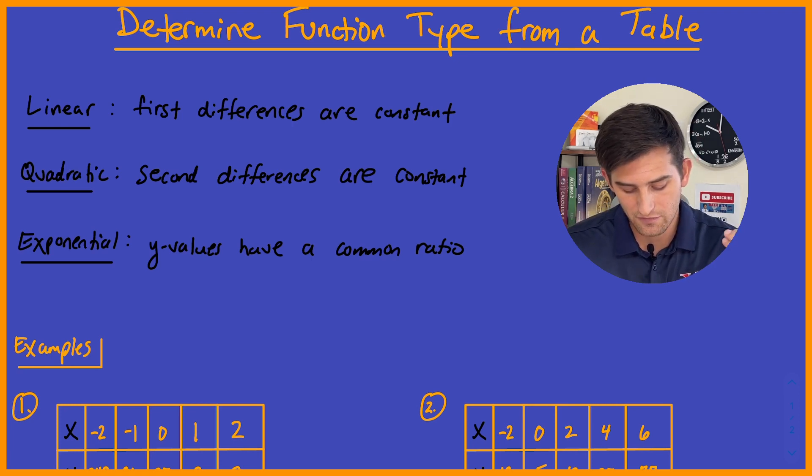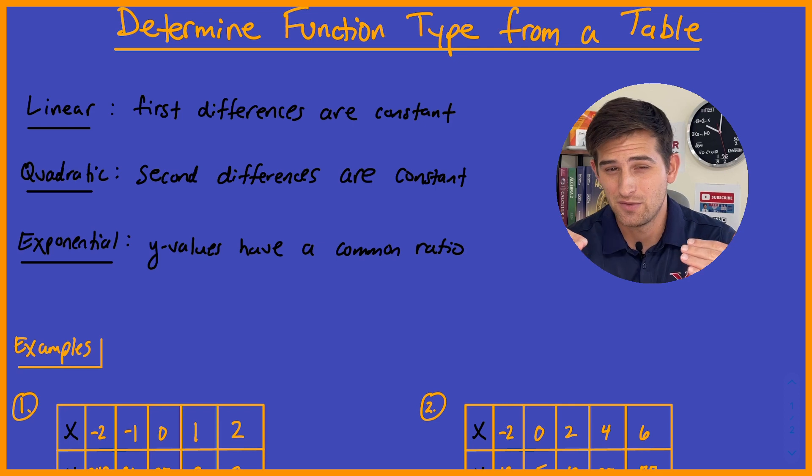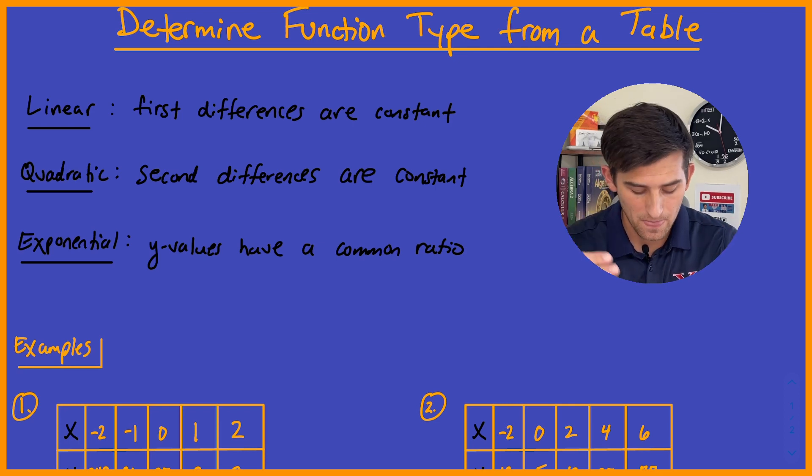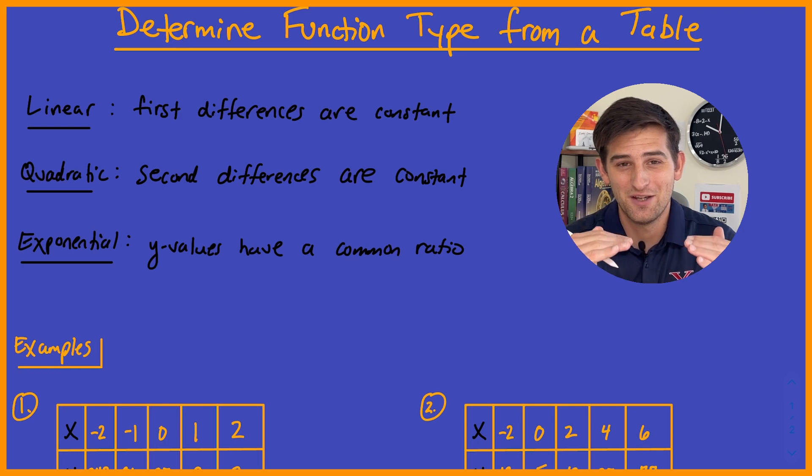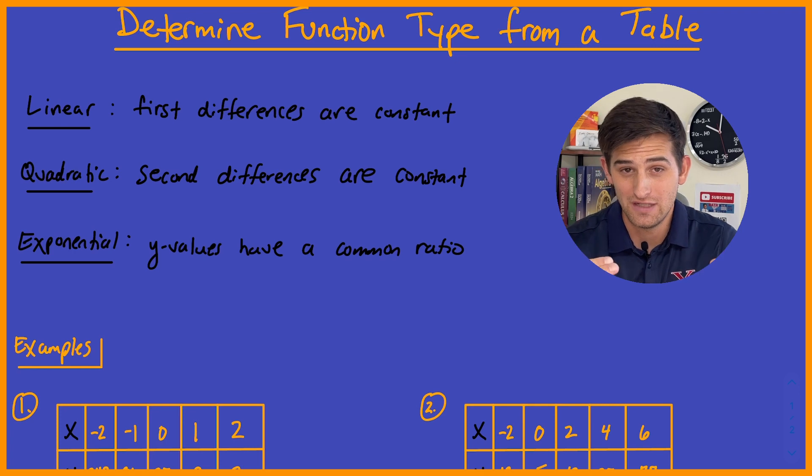So we look at linear, we see that the first differences are constant, and we're talking about our y values here. So for linear, we look at our y values, if it looks like we have a common difference between our y values, then it's linear. For quadratic, it would be our second differences. So we take the differences of our first differences, and that pattern just continues on depending on what our degree is.